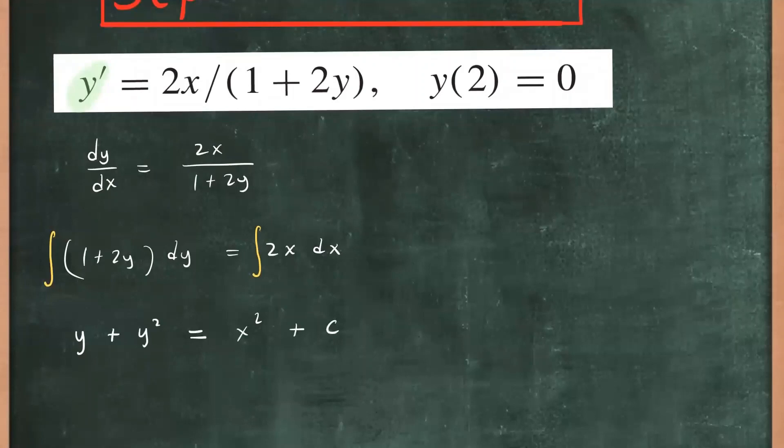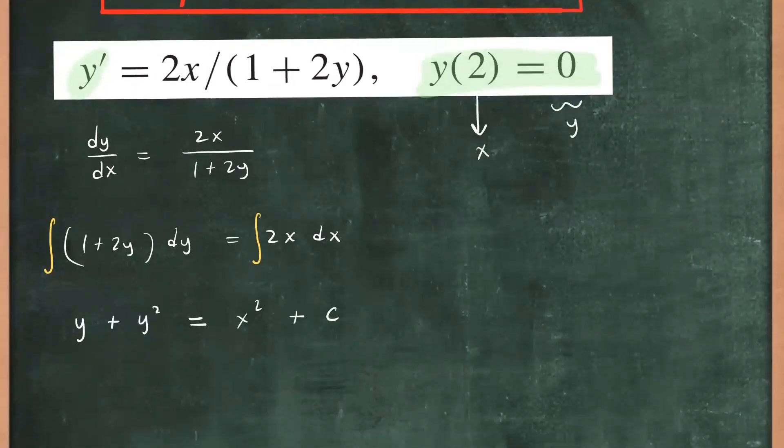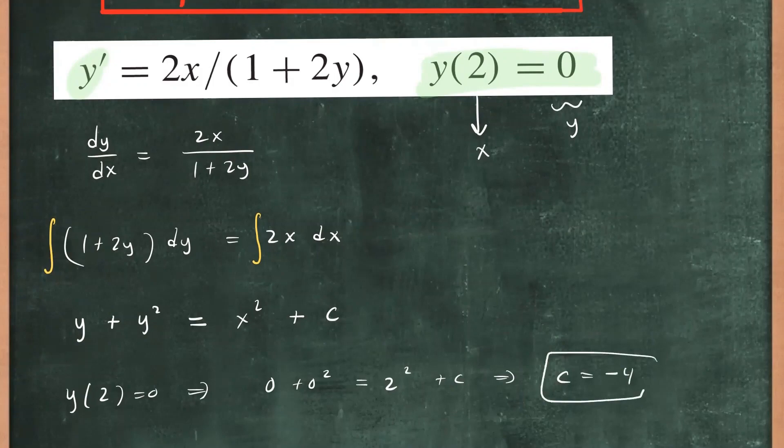So this is good. We can now apply the initial condition to solve for c. So I'm going to apply this. This means that this is your x value and this is your y value because y(2) is that. Plug them in and you get your value for c. So y(2) equals to 0 implies that we have 0 + 0² = 2² + c. So that means c is going to be negative 4.